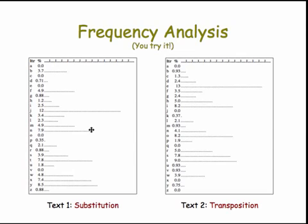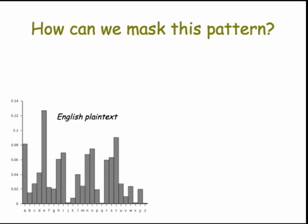Text 1 is the substitution cipher. So we can analyze simple substitution, even though there's a vast number of possible keys using frequency analysis, because the text, whether we encrypt it or not, is going to have certain frequency patterns.